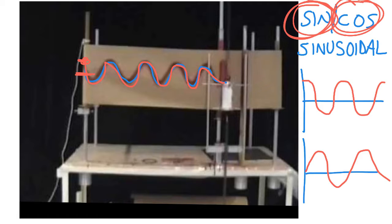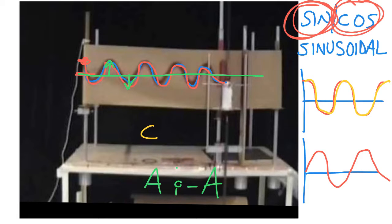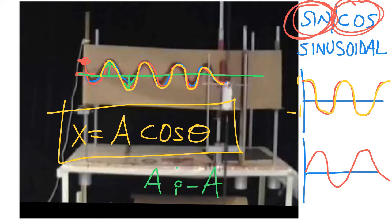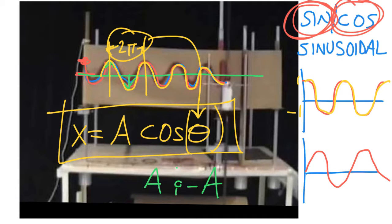As we build the equation, we need to know what the graph oscillates between — it goes between amplitude A and negative A. If the graph starts at maximum, we know it's a cosine, so x equals something times cosine θ. The cosine function goes between 1 and negative 1, but our graph goes between A and negative A, so we multiply: x = A cosine θ. Since cosine repeats every 2π but our graph may repeat differently, we write x = A cosine(ωt), where ω is the angular frequency.